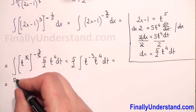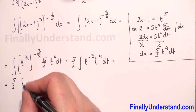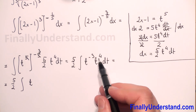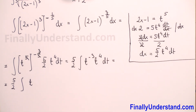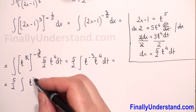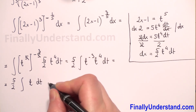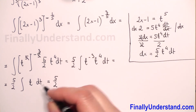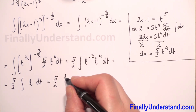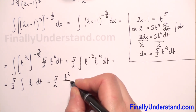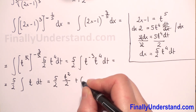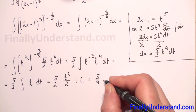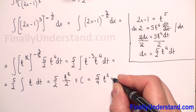We have 5 over 2 times the integral of t to some power. When we have the same base, we add the exponents: negative 3 plus 4 equals 1. So the integrand simplifies to just t. The integral of t is t squared over 2, plus constant C. Multiplying: 5 over 2 times t squared over 2 gives us 5 over 4 t squared plus C.